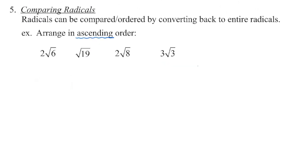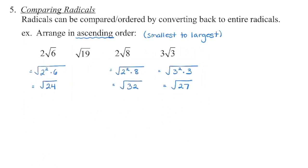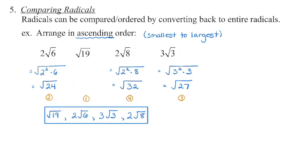The last piece we're going to review is how to compare and order radicals. We can turn these all into decimal equivalents, but another way is to write them all as entire radicals and then compare the radicands. This question asks us to arrange them in ascending order — from smallest to largest. I'll begin by turning each back into an entire radical. The square root of 19 is already entire. Then I order the radicands: the smallest is 19, followed by 24, then 27, and the largest is 32. We always write them back in the original format given, so the smallest is the square root of 19, the second smallest is 2 times the square root of 6.